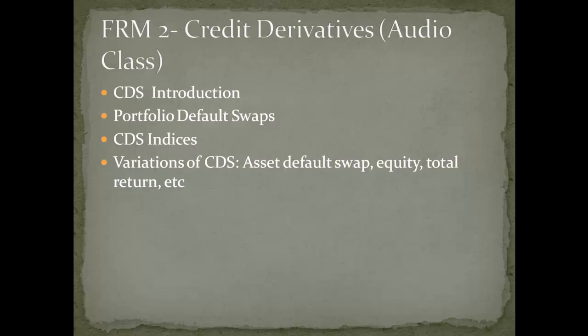In the total return swap, one party typically pays LIBOR plus a spread in exchange for the total return on an asset or reference portfolio for a stated notional period. The total return consists of all cash flows — dividends, coupons, and the percent change in asset value. Intuitively the protection seller receives all returns associated with the reference asset and must therefore bear all the risk. Unlike a CDS where the protection seller is liable for credit events only, the total return swap bears all risk including market risk, downgrade risk, and interest rate risk. The specific contract must delineate important terms including notional principal, reference assets, and methods to determine the value of the reference basket.